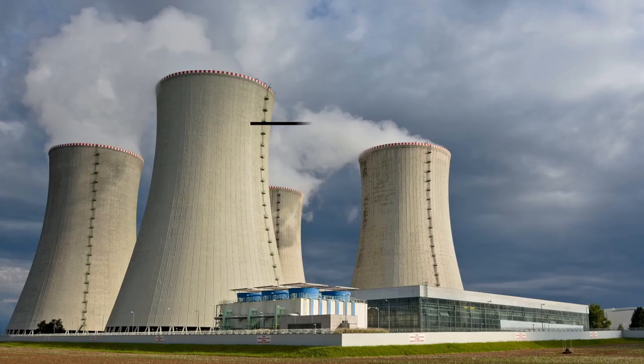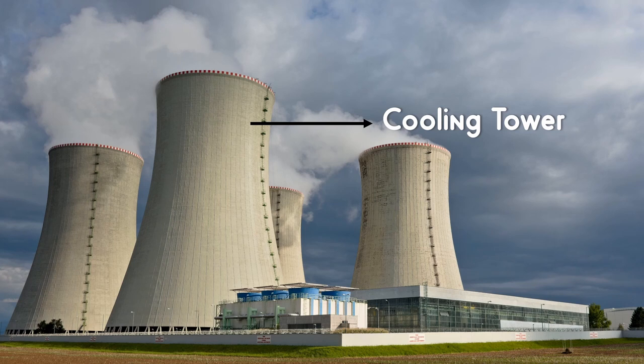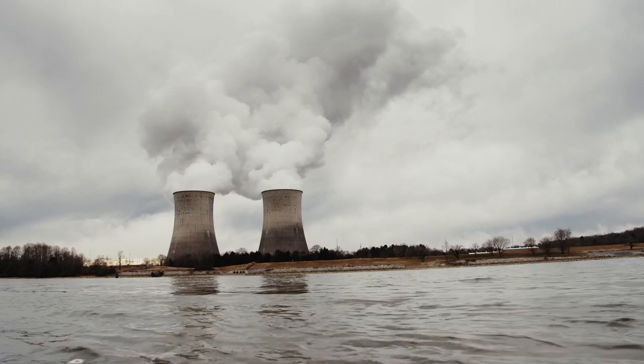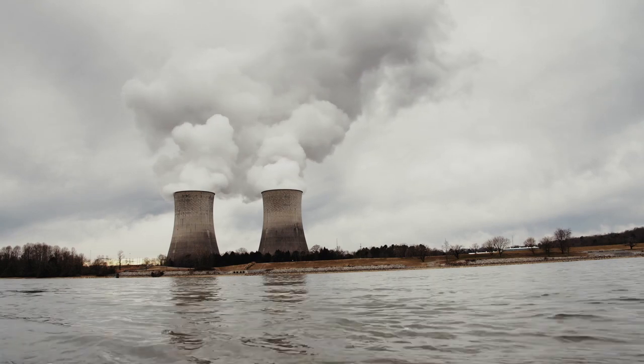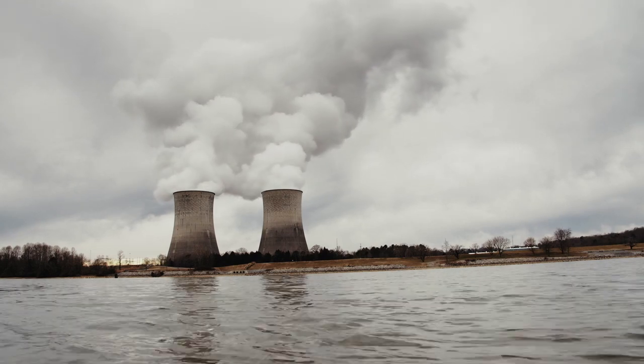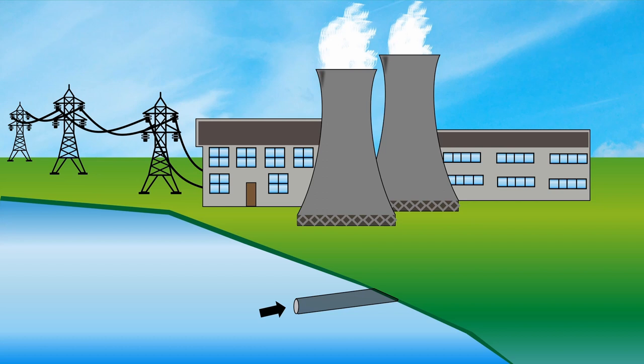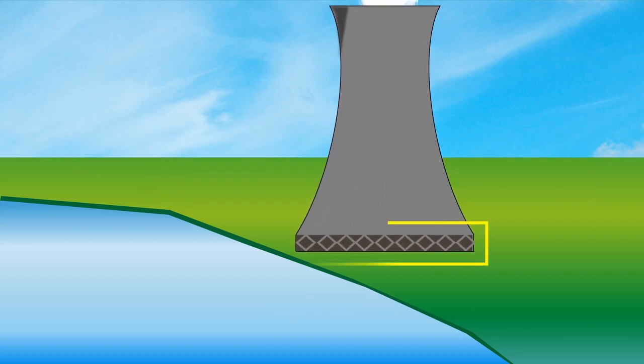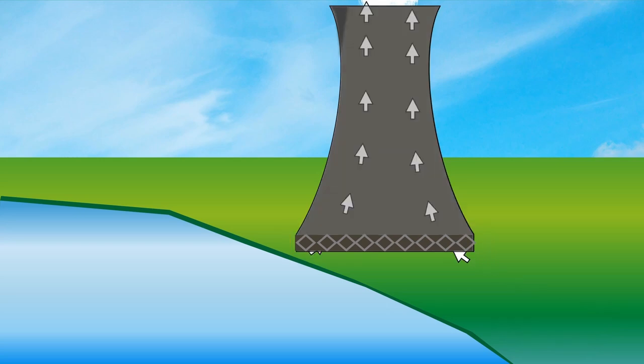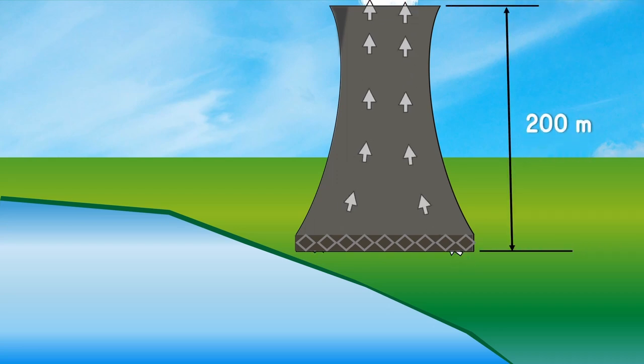This hyperbola shaped structure is the cooling tower. Do you know why hyperbola shape is preferred? First and foremost the hyperbola shape strengthens the entire structure. Constructing this shape requires fewer materials. At the bottom of the tower the structure is open to draw fresh air which then flows upwards. For sufficient air flow to occur the height of the cooling tower tends to be large around 200 meters tall.